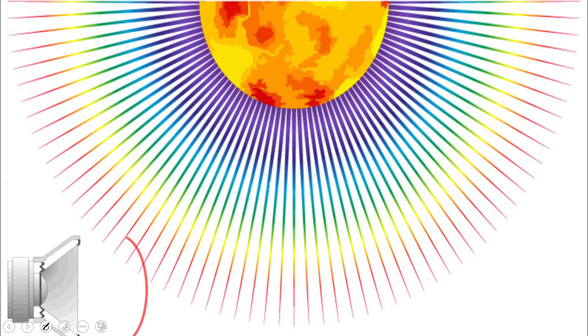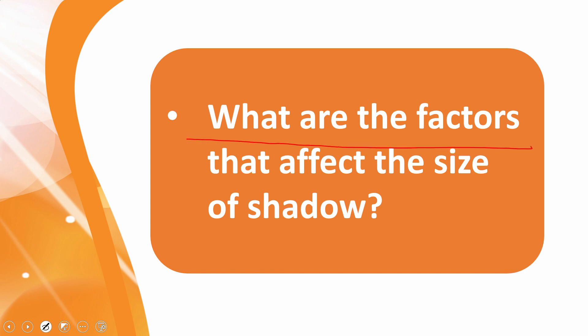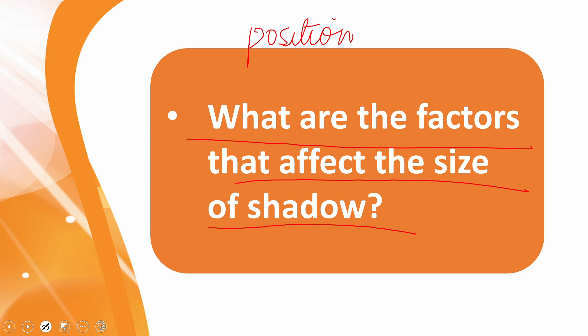Now let's move to the evaluation. What are the factors that affect the size of the shadow? There are two factors: one is positioning and the other is distance. What is the position — is the light source at the top, to the right, or to the left? And how far or close is it? Position and distance both affect the size and shape of the shadow.